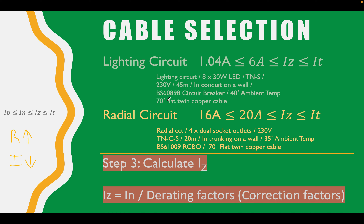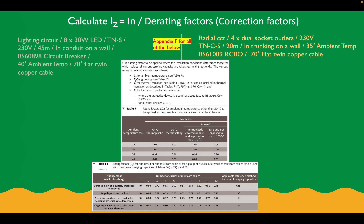We're going to apply this theory straight through on our two circuits, select our correction factors, and fill out this next part of the formula. We've got our two circuits — a lighting circuit and a radial circuit — our formula at the top, and these three tables extracted from the on-site guide, all in appendix F.